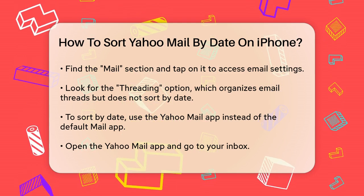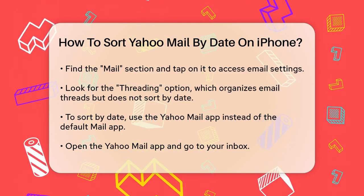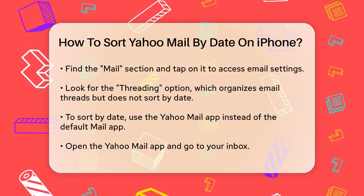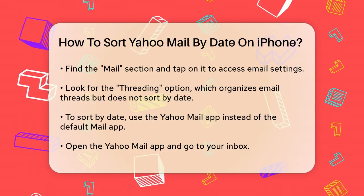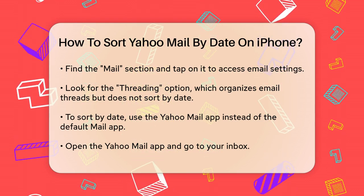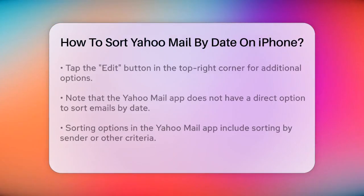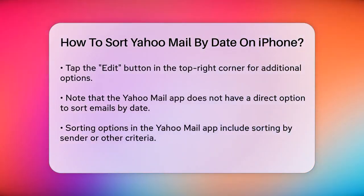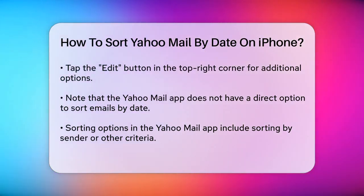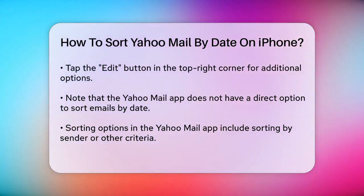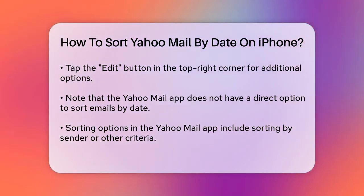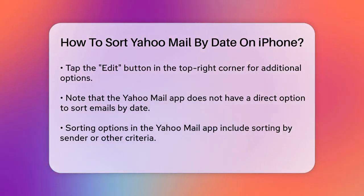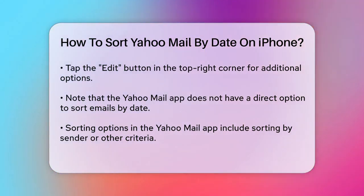To sort emails by date, you need to use the Yahoo Mail app instead of the default Mail app. Open the Yahoo Mail app on your iPhone. In the Yahoo Mail app, go to your inbox. Tap the Edit button located in the top right corner of the screen — this will give you some additional options. However, the Yahoo Mail app on iPhone doesn't have a direct option to sort emails solely by date. Instead, it allows you to sort by sender or other criteria.